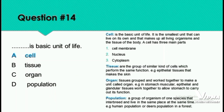Question 14: What is the basic unit of life — cell, tissue, organ, or population? Cell is called the basic unit of life; option A is correct. The cell is the smallest unit that can live on its own and makes up all living organisms and tissues of the body.